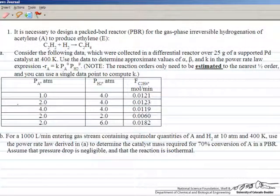This problem deals with the hydrogenation of acetylene over a supported palladium catalyst in a packed bed reactor. We need to evaluate the reaction kinetics assuming a power rate law model where we find K, alpha, and beta.